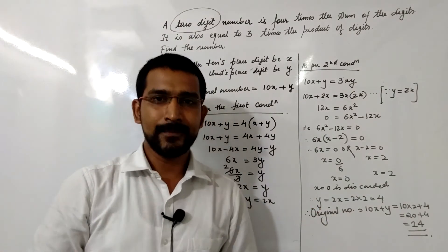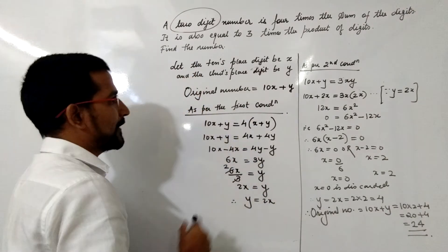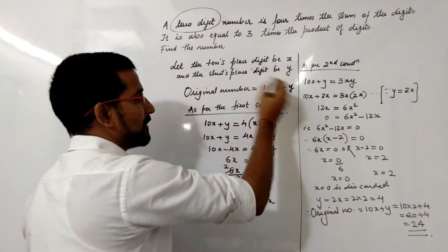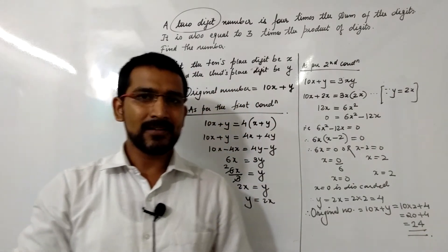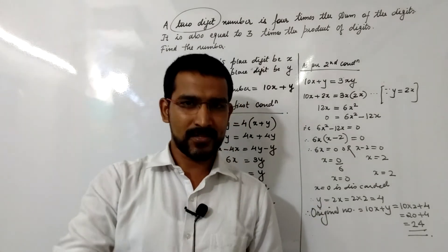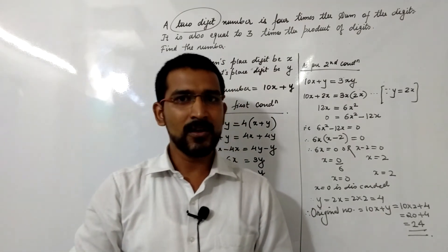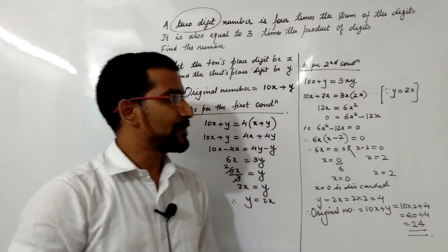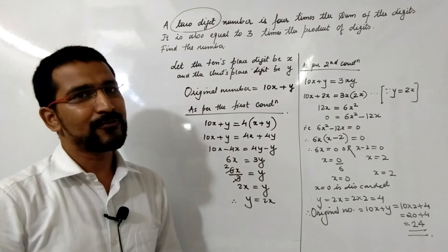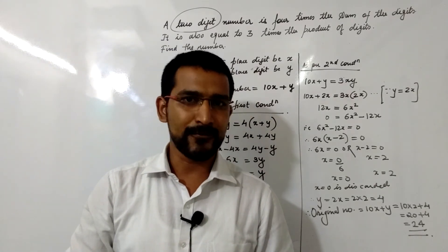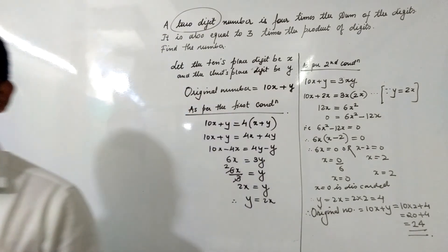This is how we can solve any word problem based on two-digit numbers. Many students find it difficult to form these numbers. In many examples you also get the condition where digits are reversed. We'll cover those in the next video. Hope this was helpful — try to solve 4 to 5 questions of this type to build confidence. Thank you!